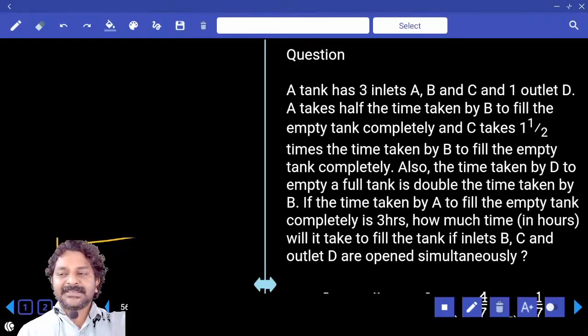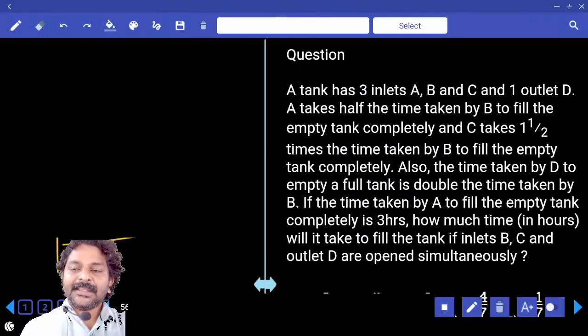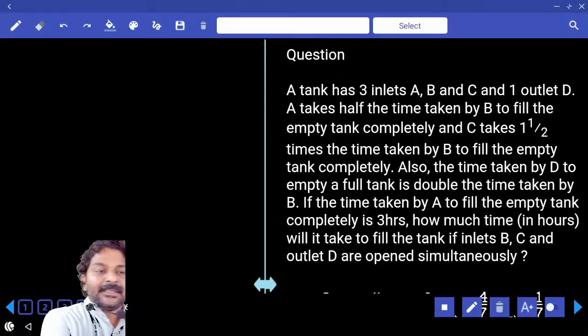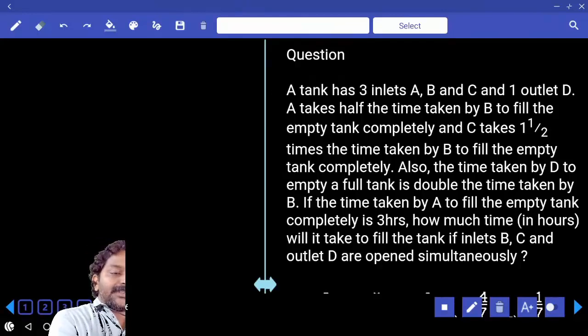A tank has three inlets A, B, C and one outlet D. A takes half the time taken by B to fill the empty tank completely. So I will start with B.